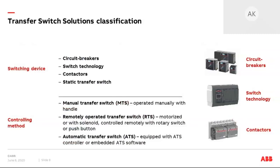Transfer switches can also be differentiated by controlling method. There are manual transfer switches operated with a handle, with an operator standing in front of the switchgear. Remotely operated transfer switches are usually equipped with an electrical motor or solenoid, though the presence of an operator is still required to initiate the transfer. The most common controlling method is automatic — automatic transfer switches are usually remotely operated equipment with an external ATS controller or embedded ATS software.